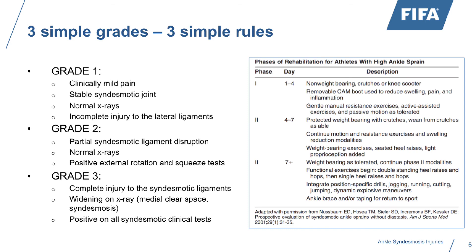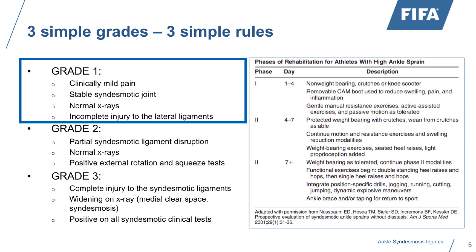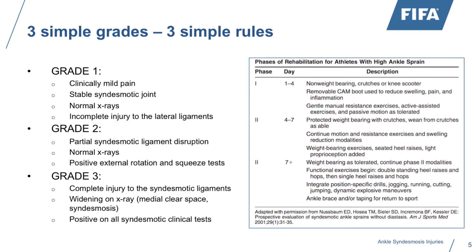We like to keep grading simple with three grades. If you have a suspicion of a syndesmosis sprain, we mainly talk about three grades. Grade one is the mild one — clinically you have some pain, a stable joint, fine x-rays, and some incomplete injury to the lateral ligaments. This grade is treated conservatively. Grade three is an injury where there's complete injury to the syndesmotic ligament with widening on x-ray and positive testing, mainly external rotation test and squeeze test — this grade probably always requires surgery.